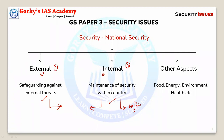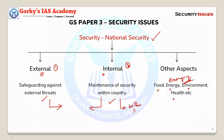This external-internal classification is traditional. But in recent times, we have many other securities of national importance: food security, energy security, environmental security, health security, financial security, nuclear security, and social security. There are many such security aspects. In general, we classify them traditionally as external and internal, with these newer emerging categories on top.